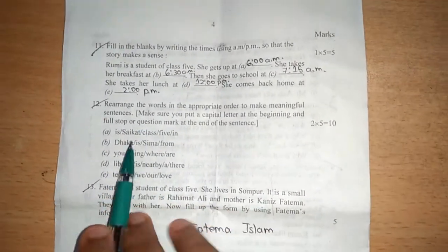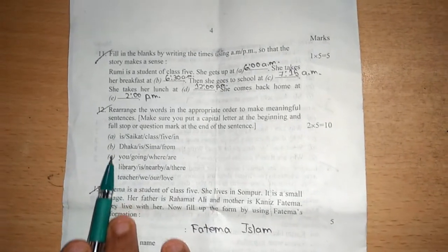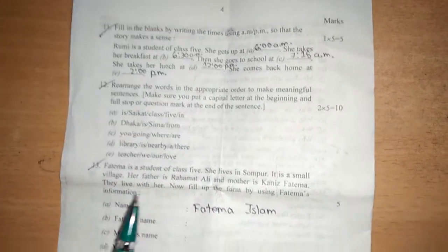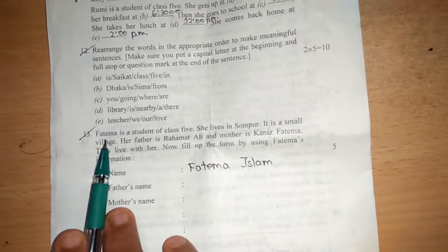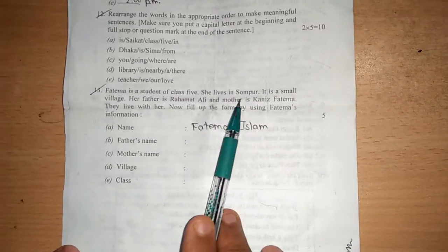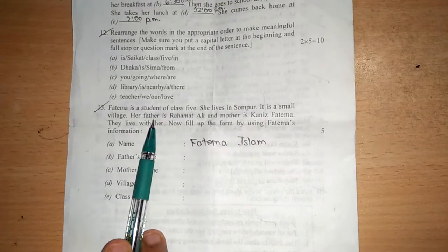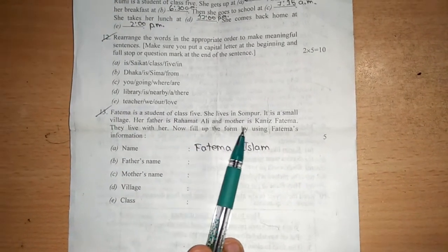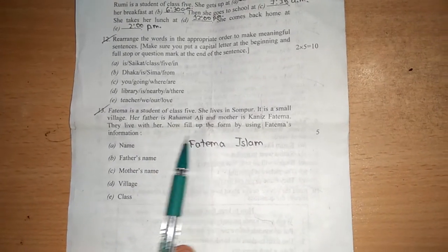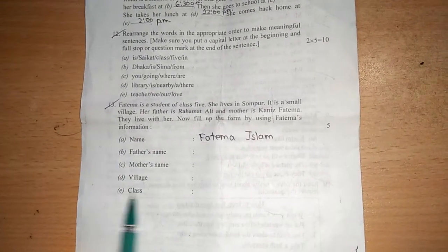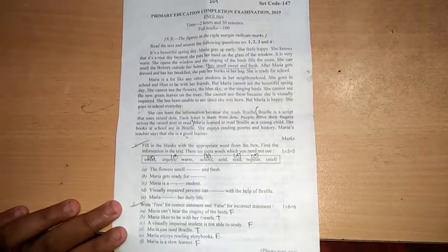Now number twelve, rearrange. There are five rearranged, and each contains two marks. Now number thirteen is form fill up. Fatima is a student of class five. She lives in Shungpur. It is a small village. Her father is Rahmat Ali and mother is Kaniza Fatima. They live with her. Now fill up the form by using Fatima's information. We have to fill up this form.